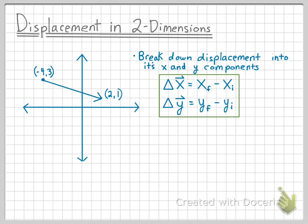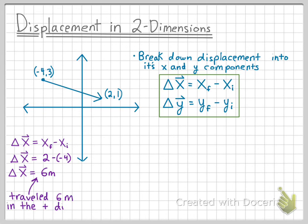First, let's calculate the displacement in the x direction. Our final x position was 2, and our initial x position was negative 4. So 2 minus negative 4, we get a displacement of 6 meters. This means that we traveled 6 meters in the positive direction.